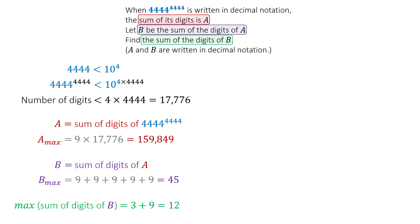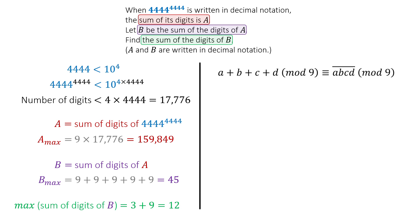To explore this, we need a tool from number theory: the digital sum, or mod 9. This tells us that the sum of the digits of a number is congruent to the number modulo 9.